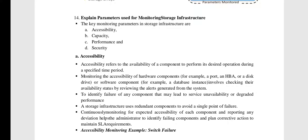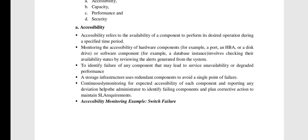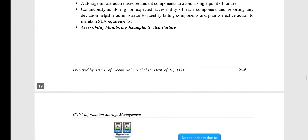The first monitoring parameter is accessibility. Accessibility refers to the availability of a component — any hardware or software component. Continuous monitoring for expected accessibility of each component and reporting any deviation helps the administrator identify failing components and plan corrective actions.